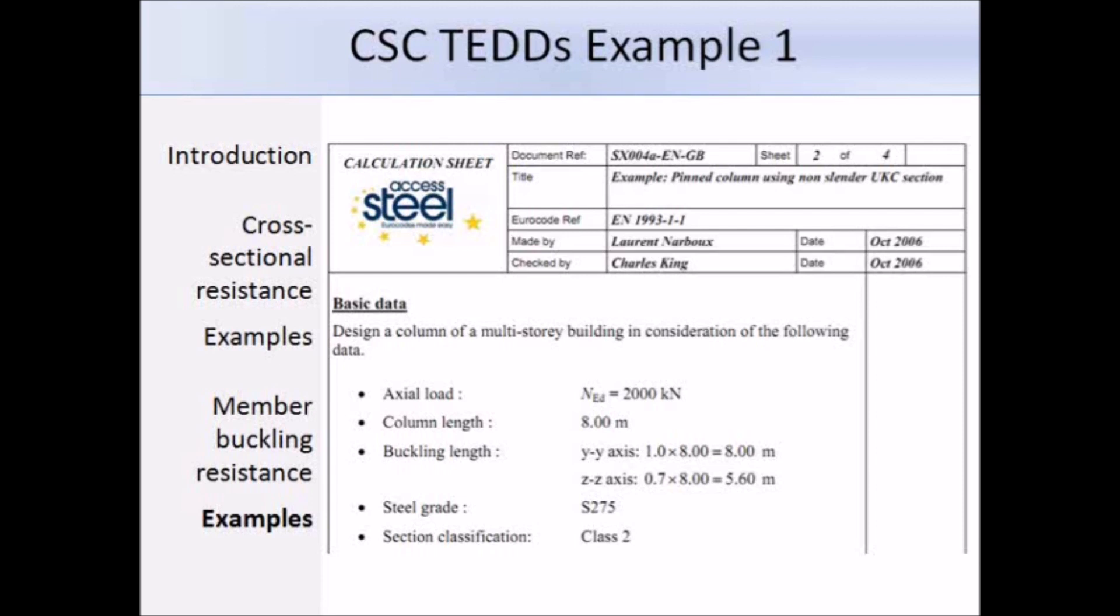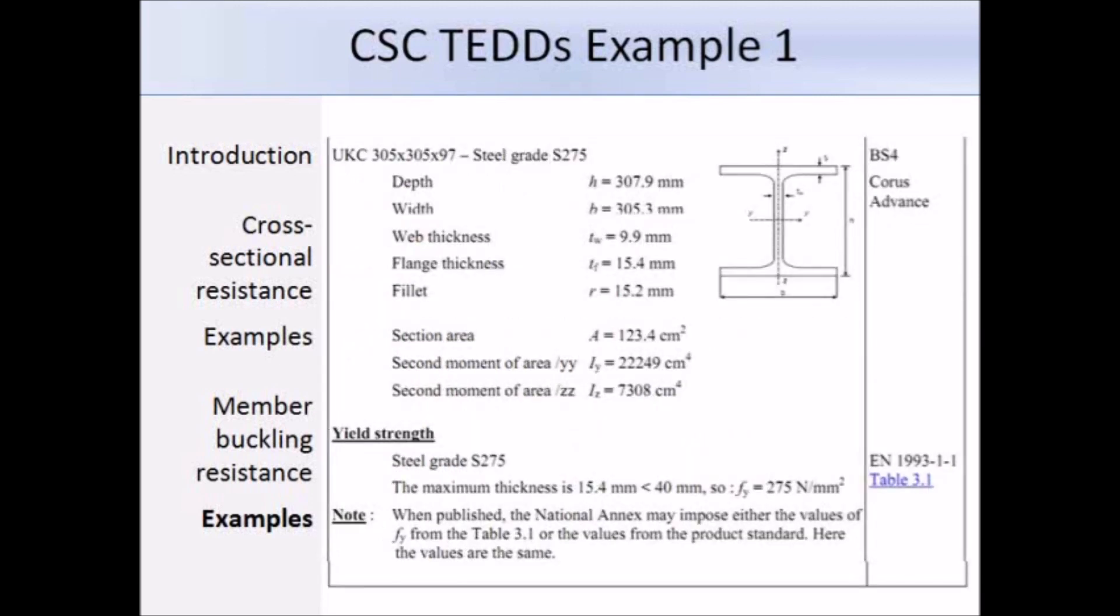We're dealing with 305 by 305 by 97 UC, and here are a list of some of the section properties for our column: the depth, width, web and flange thicknesses, the root radius, the section area, and second moment of area about both axes. The first thing we need to do is work out the yield strength Fy. This example is using table 3.1 from the Eurocode, and for a maximum thickness of 15.4 mm we get a yield strength of 275 N/mm².